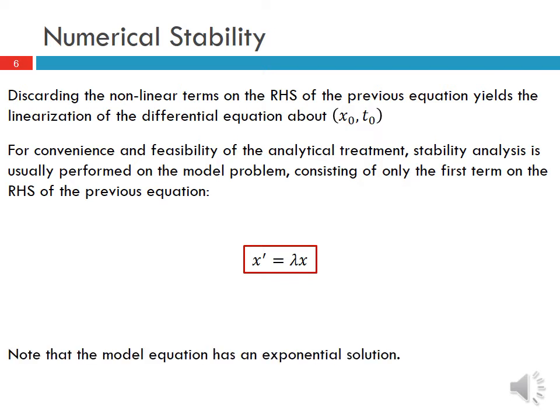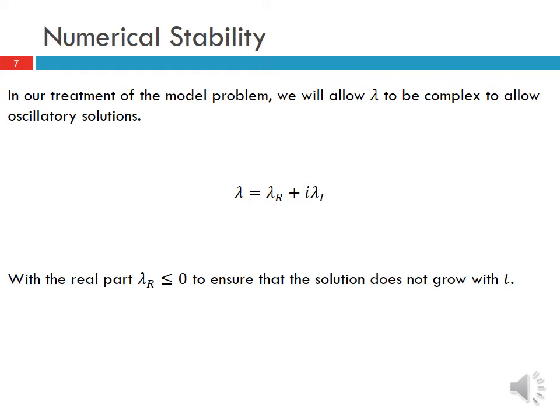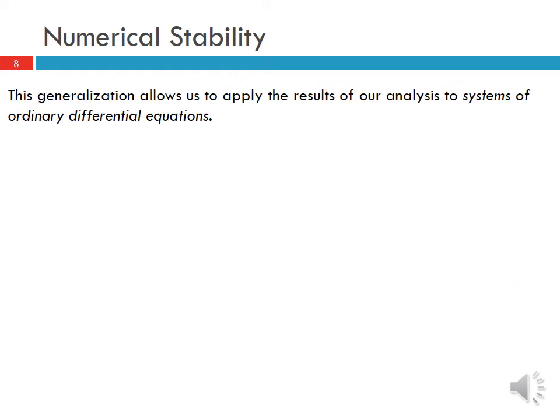The model equation has an exponential solution. In our treatment of the model problem, we must allow λ to be complex, which allows us to consider oscillatory solutions. In general, λ = λᵣ + i·λᵢ. We consider only cases where the real part λᵣ ≤ 0 to ensure that the exact solution does not grow with t — if λᵣ < 0, the solution decays. Generalizing this way allows us to apply the results to not only single ODEs but also systems of ordinary differential equations.